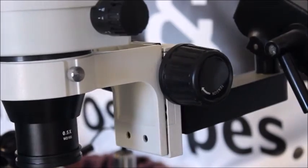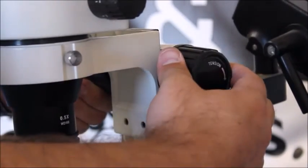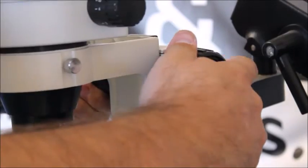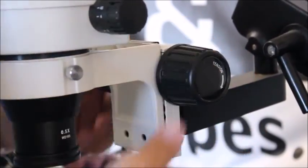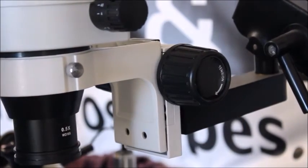Now the way you tighten this one is you're going to grab the knobs on both sides and just counter turn them. You'll feel it start to get a little bit tighter and now it stays in place.